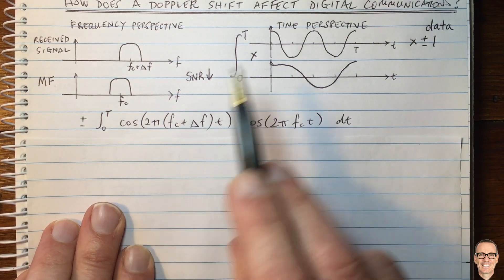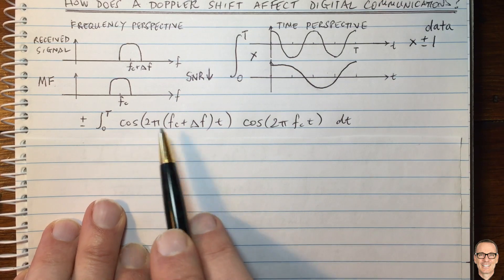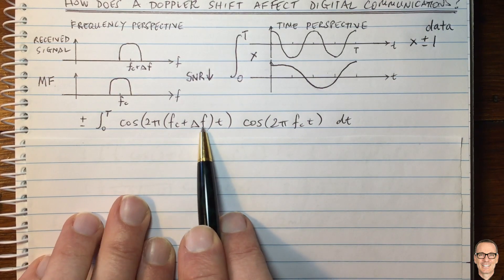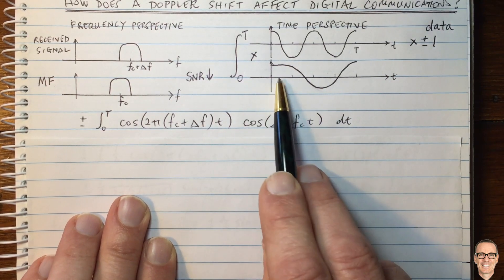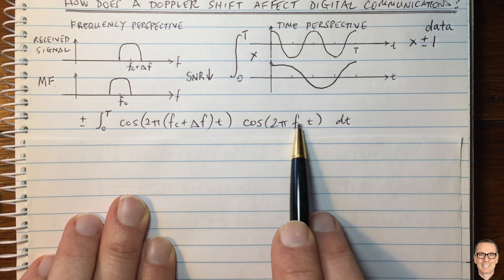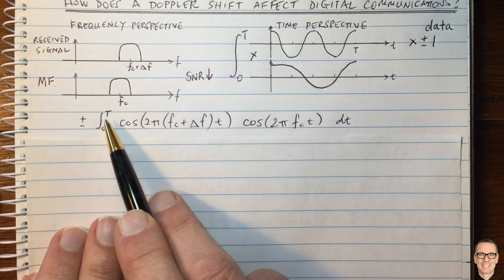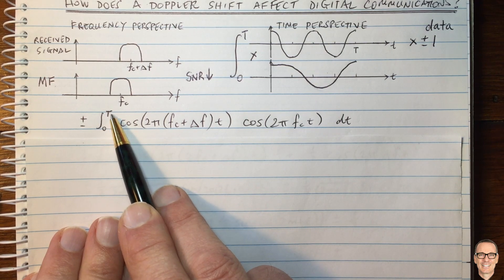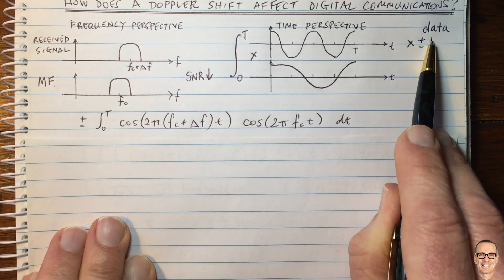Well, it's a simple case of the cos waveform here, this top one here, which is cos 2 pi Fc plus delta F times T, multiplied by this one, which is at the carrier, which is the matched filter. Then we're integrating over capital T time, and the plus and minus one comes from the data.